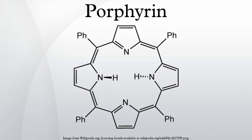Chlorophyll is a magnesium porphyrin and heme is an iron porphyrin, but neither porphyrin is present in petroleum. On the other hand, nickel and vanadyl porphyrins could be related to catalytic molecules from bacteria that feed on primordial hydrocarbons.